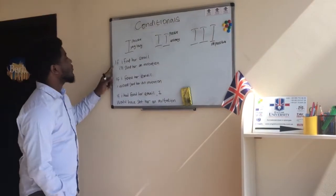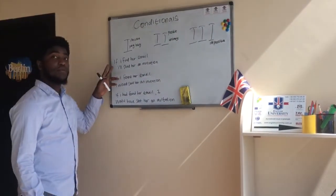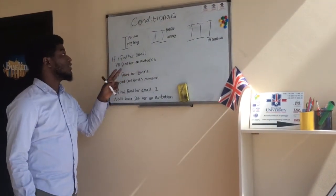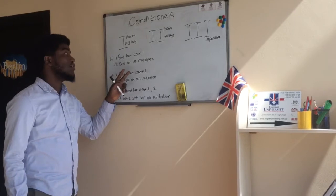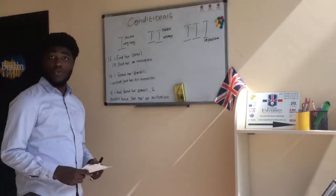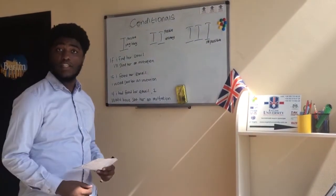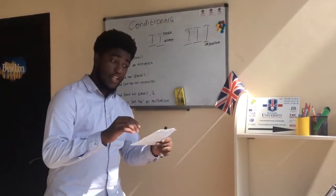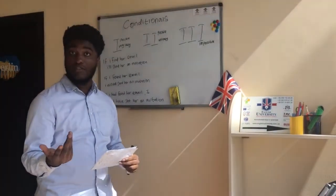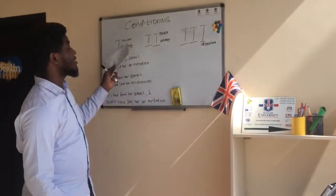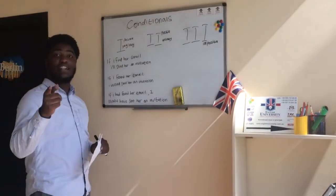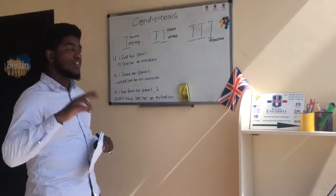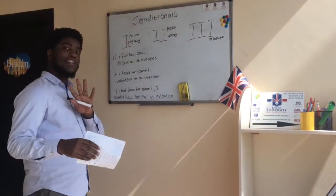The first example is: if I find her email, I will send her an invitation. If you can check and find the email, then you send the invitation. That is possible and it's likely that you will find the email.